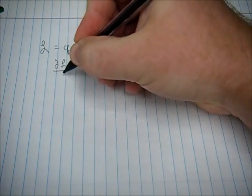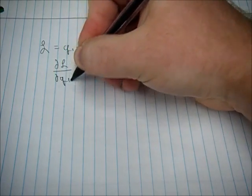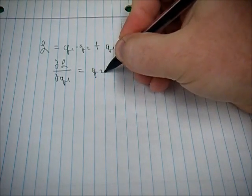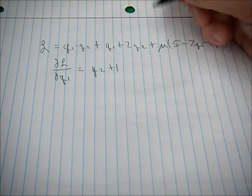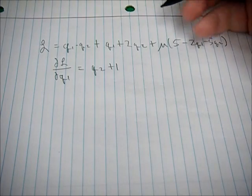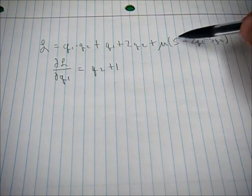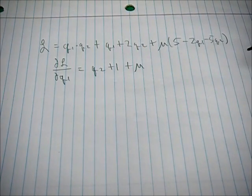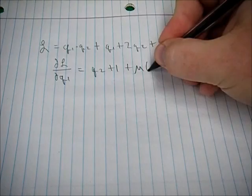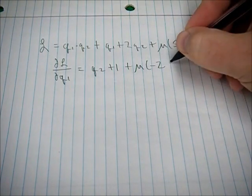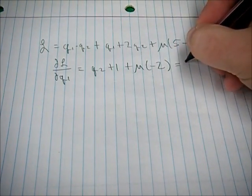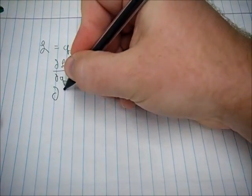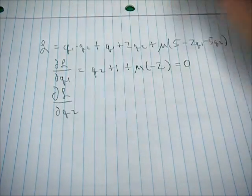We then take the first order conditions. The partial of the Lagrangian with respect to q1 gives us q2 plus 1 from the first term. The second term drops out, and from the constraint component we get mu times negative two. We set that equal to zero.